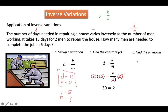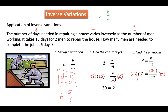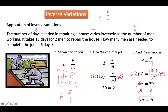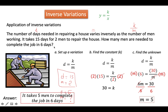Finally, we use the same variation to find the number of men. We replace k by 30 and D by 6. Since M is in the denominator, we multiply each side by M to get 6M equals 30. Then we divide both sides by 6, and 30 divided by 6 is 5. Since it is a word problem, the answer is: it takes 5 men to complete the job in 6 days.